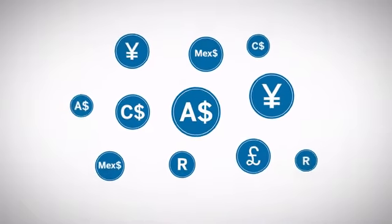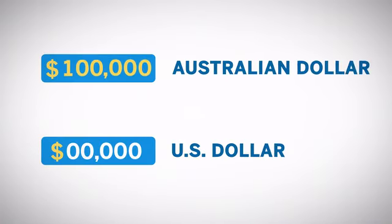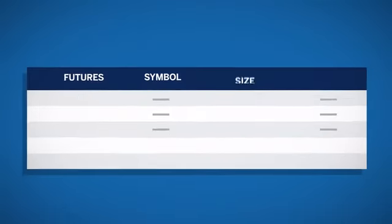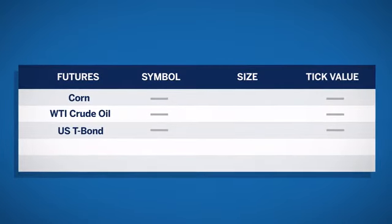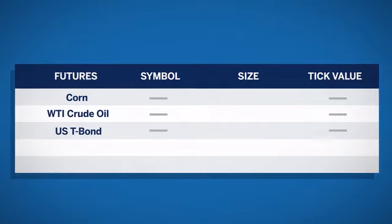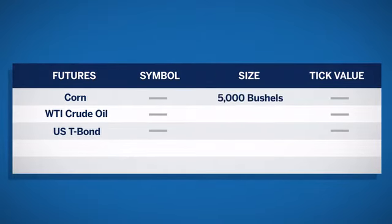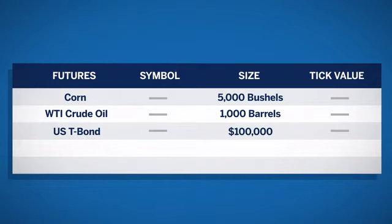Futures contracts for financial products are understandably more straightforward. For example, the U.S. dollar value of 100,000 Australian dollars. Each futures contract specifies the quantity of the product delivered for a single contract, also known as contract size. For example, 5,000 bushels of corn, 1,000 barrels of crude oil, or treasury bonds with a face value of $100,000 are all contract sizes as defined in the futures contract specifications.